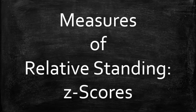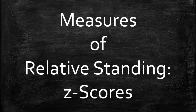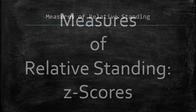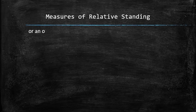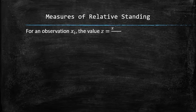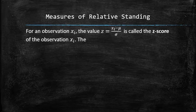Next, we will discuss the measures of relative standing that allow us to rank each observation in the dataset. For an observation x sub i, the value z is equal to x sub i minus mu divided by sigma, and is called the z-score of that observation.